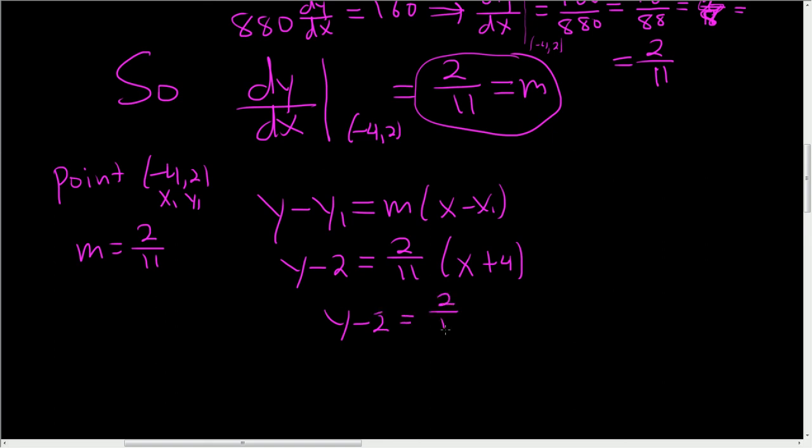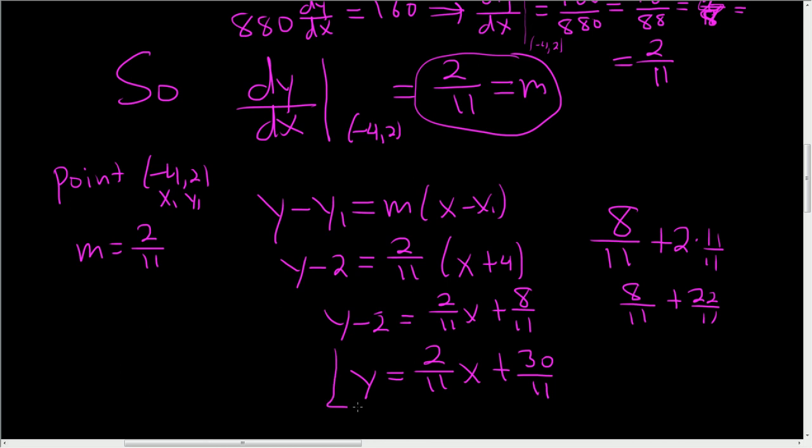2 over 11 times x plus 8 over 11. So y equals 2 over 11x plus, let's think. We're going to add 8 over 11 to 2. So we're really adding 8 over 11 plus, let's see, multiply this by 11 over 11. So 22 over 11, so that's plus 30 over 11. And that's it.